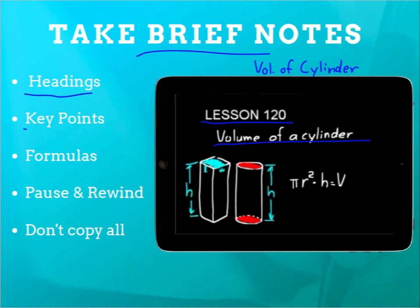So the lecture, you'll watch that. You'll take brief notes. And so that means you want to include things like headings, like it's lesson 120, and subheadings, volume of a cylinder. But you don't have to write that whole thing out. You can just do it short, volume, period, of cylinder. You know, shorthand is what that's called sometimes, abbreviated. You also want to include key points, just key ideas, problem-solving tips that you hear or that you see come up.